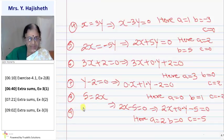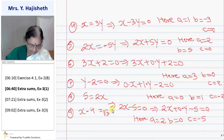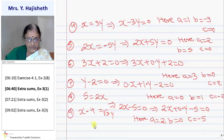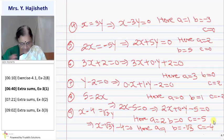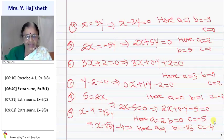Extra sum: suppose x minus four equals root three times y. I bring everything to the same side: x minus root three y minus four equals zero. So here a is one, b is minus root three and c is minus four. You should bring everything to the same side and then decide the values of a, b and c.